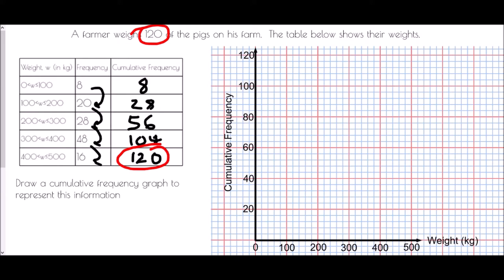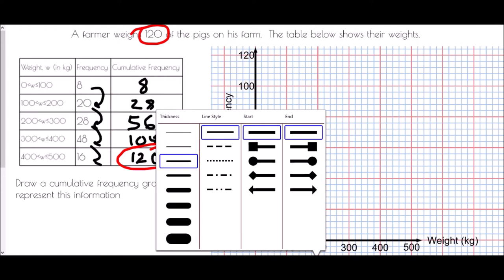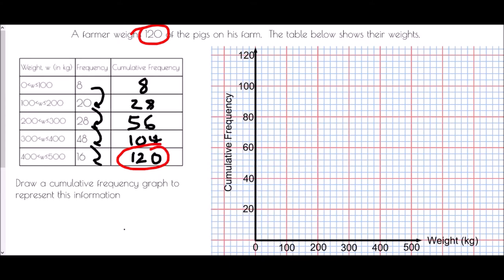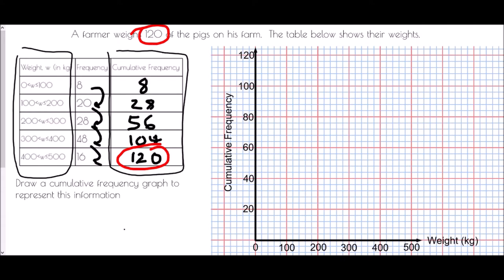Next, what we're looking to do is actually draw ourselves a graph. As it's a graph, we're looking to draw some points — the values along the bottom are the weights, and our cumulative frequency values are going to be our y-axis values.